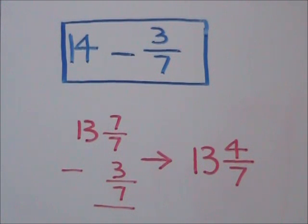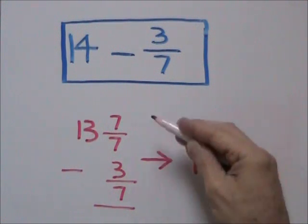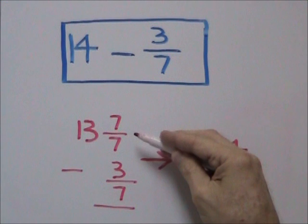The easiest way to work out this problem is to write both numbers in fraction form. We're going to write the problem vertically.